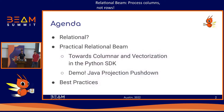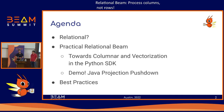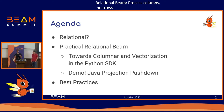Let's jump into the agenda. We're first going to introduce what we mean by relational Beam and some of the concepts in Beam that are relational. Then we'll get into work we've done since the last Beam Summit. I'm going to present work on enabling columnar processing and vectorization in the Python SDK, and Andrew will present work our colleague did enabling projection pushdown in Java IOs. Finally, we'll cover practical best practices for your pipelines.